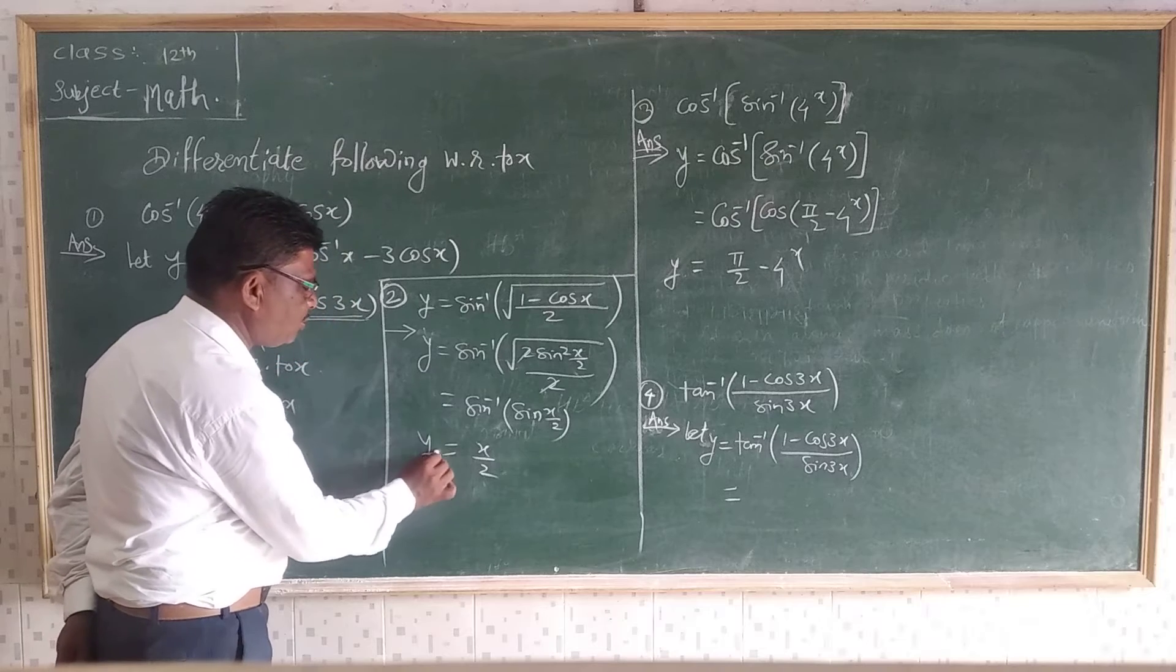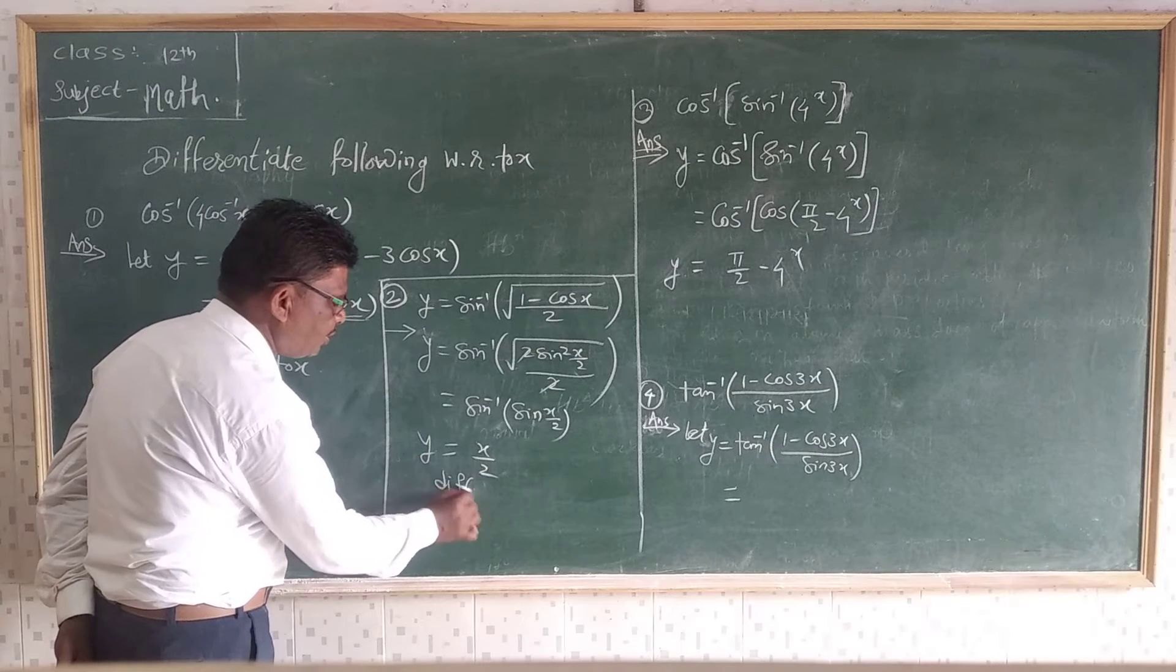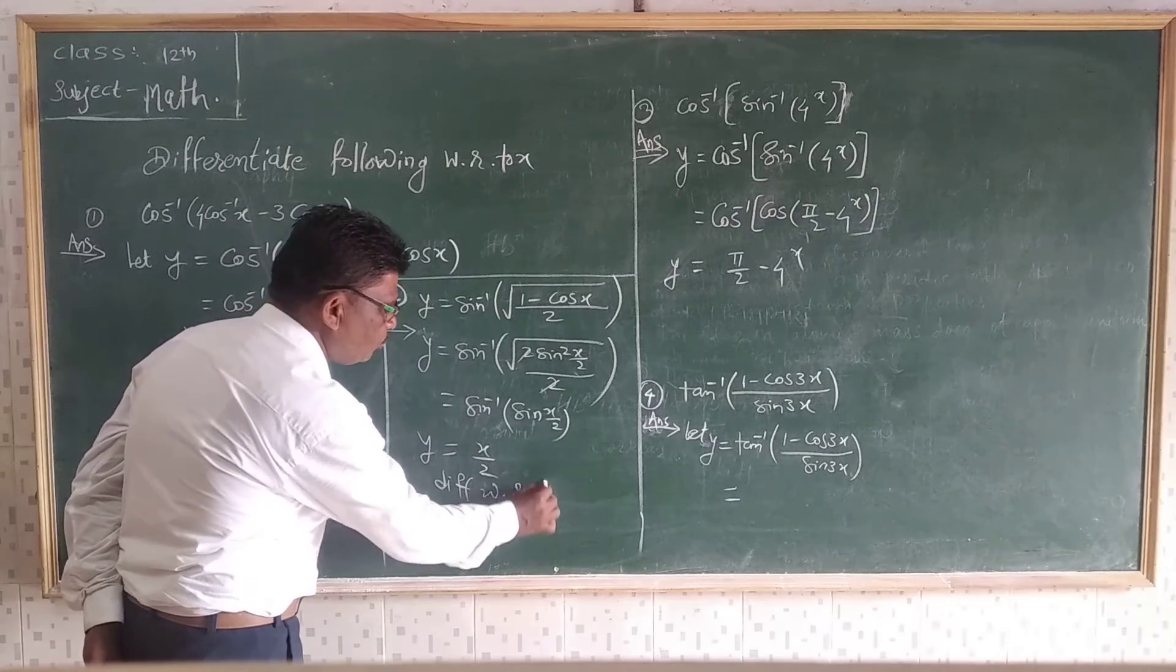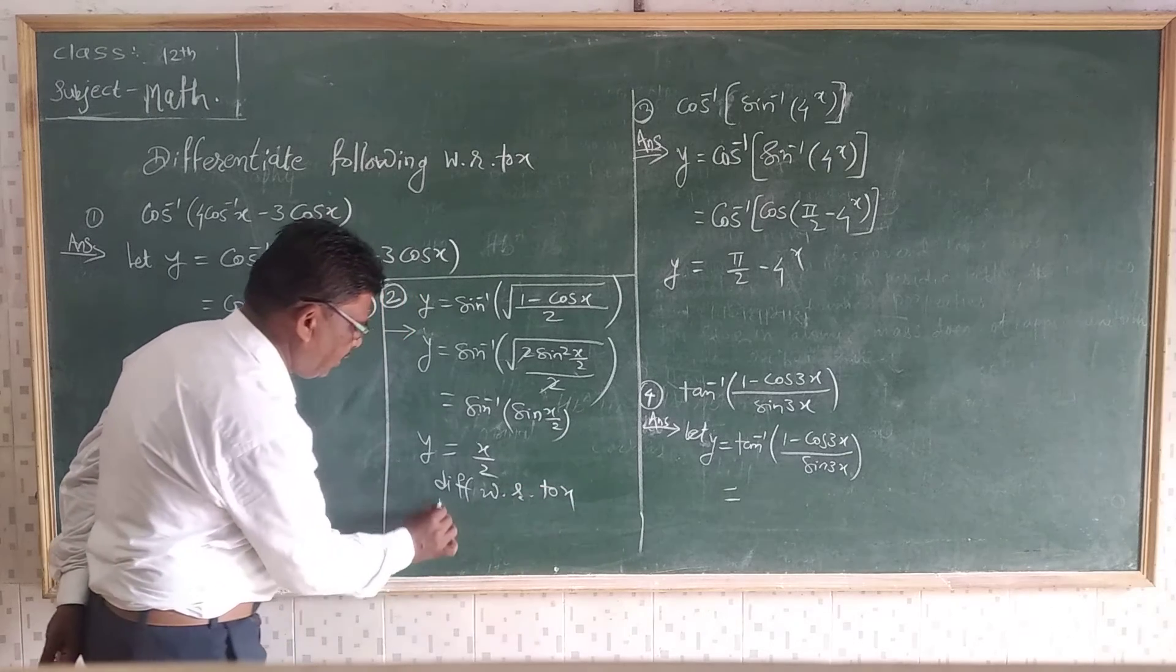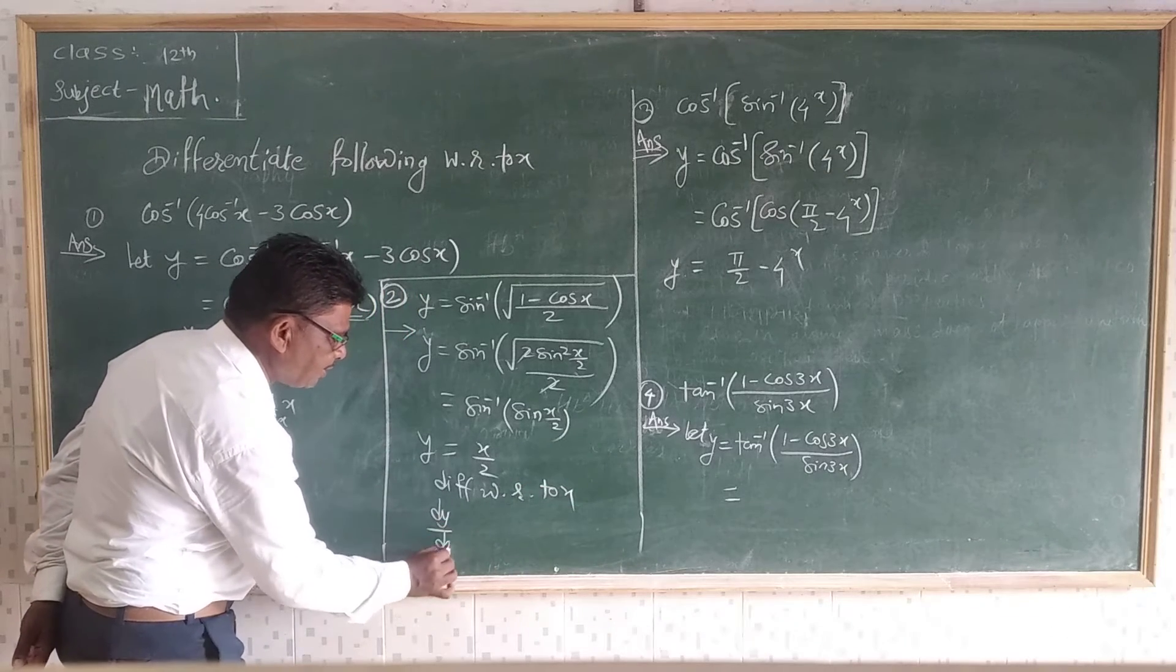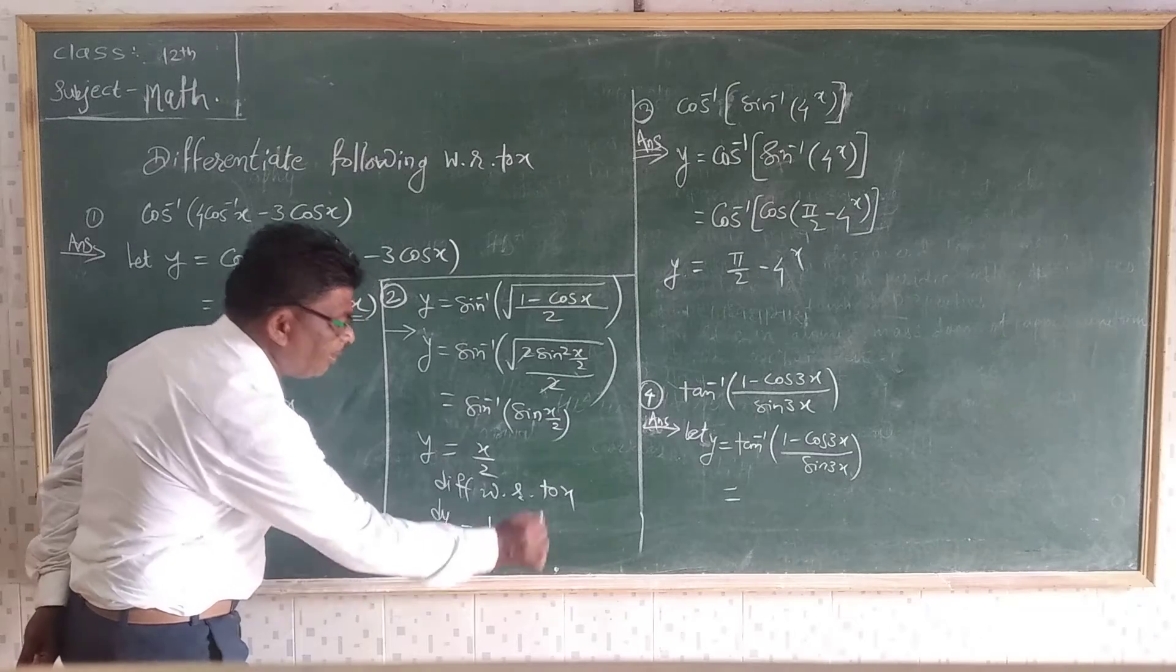So then, after simplification we differentiate this with respect to X. That is dy/dx is equal to 1/2.